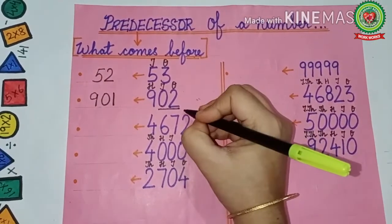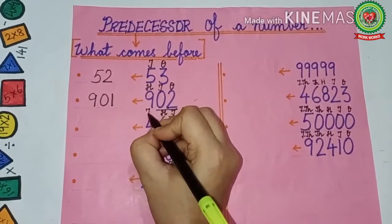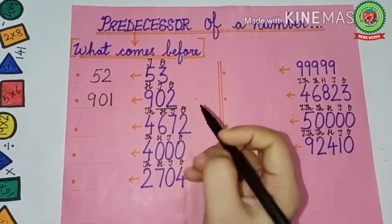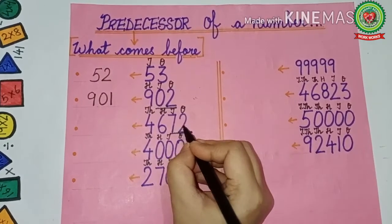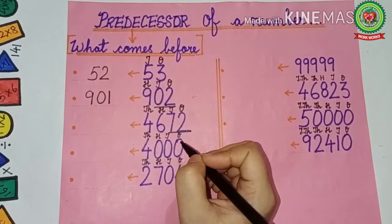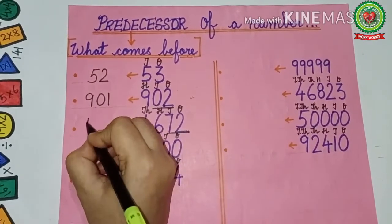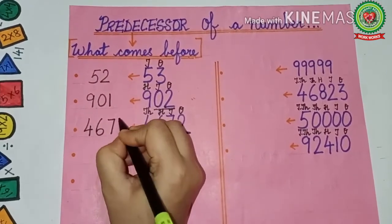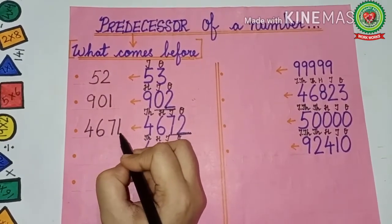Now see the next number: 4672. Write the place value table first — ones, tens, hundreds, thousands. We will take the ones and tens place together and read that as 72. We have to see what comes before 72 — that is 71. So, the thousands and hundreds place will remain the same, that is 4,600. Before 72 is 71, so the predecessor is 4,671.